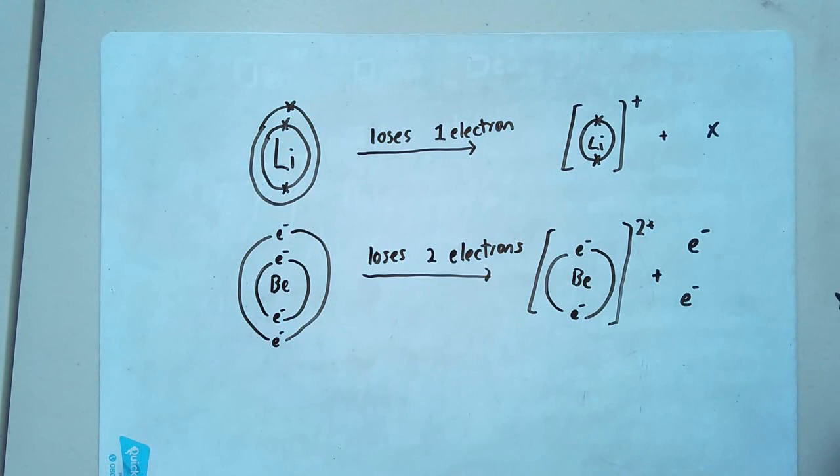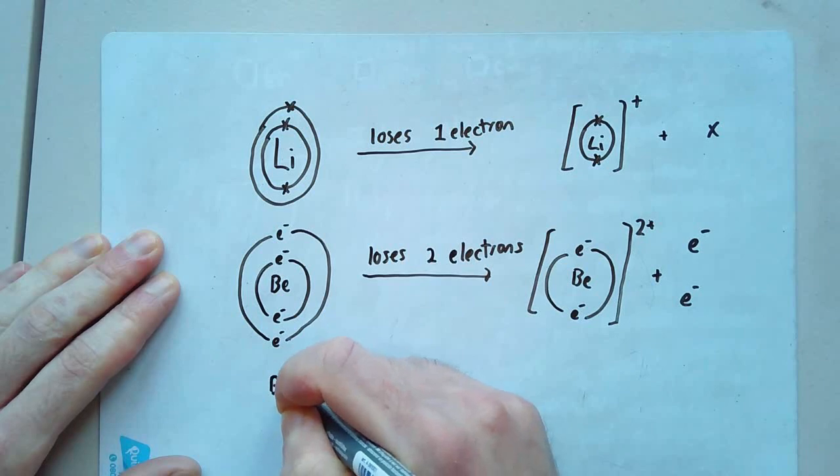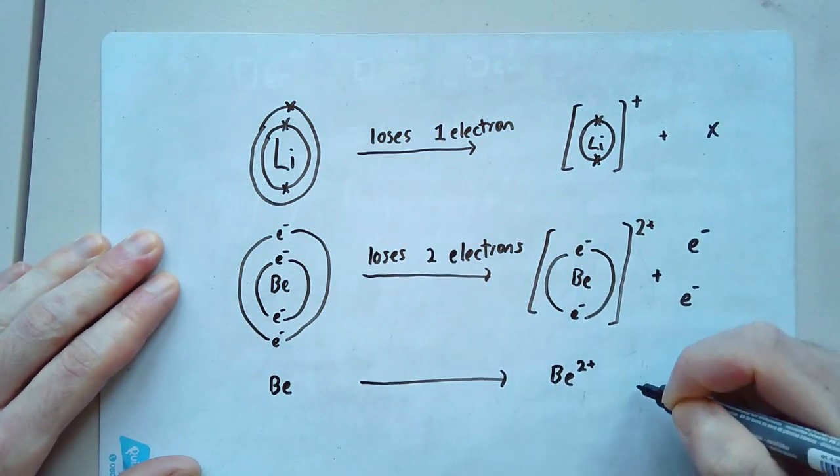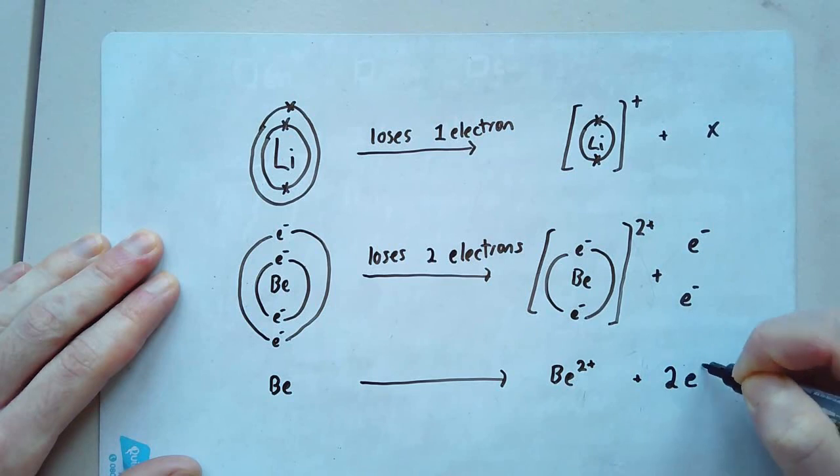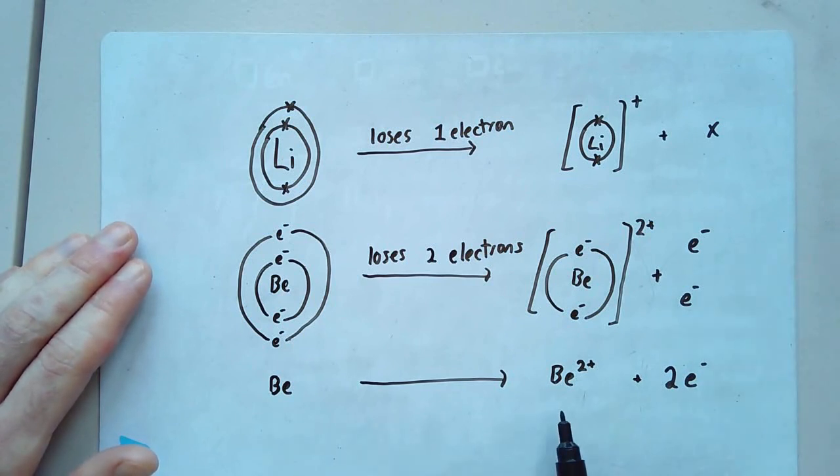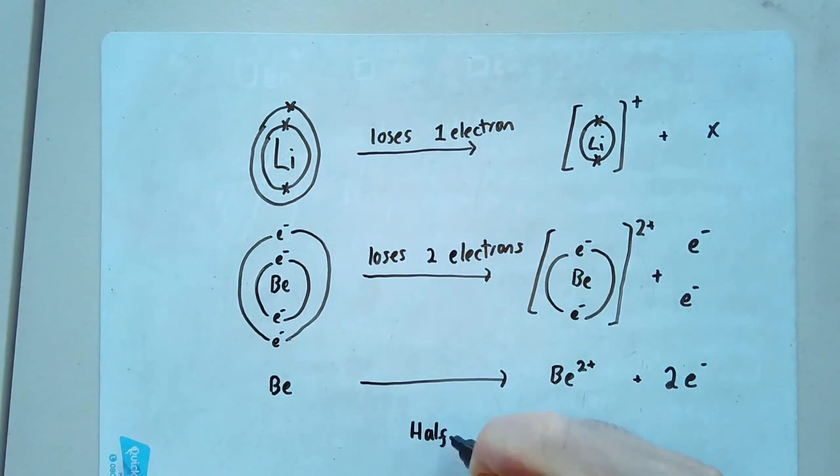Now what chemists like to do is we don't really want to draw this out every time. It's a bit tiresome. So what I'll do instead is I'll just summarize it. It's Be forming Be 2+ and 2 E-. Why have I got two of them? One, two. So I've got the Be forms Be 2+ and 2 E-. Now that's really, really clear. It's super obvious where this comes from. You start as your atom of beryllium. You lose two electrons. It becomes Be 2+. And there are your 2 E-. But what I've just done is construct what's known as a half equation.